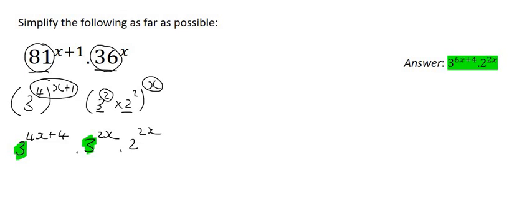So what does the exponent rule say? When those bases are the same, then you should add the exponents, and then that's going to become 6x plus 4, and then this will just hang out at the end as 2 to the power of 2x.